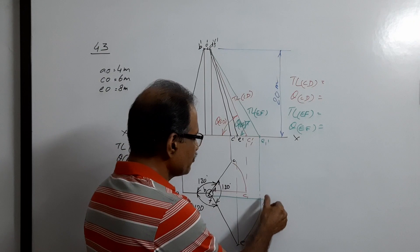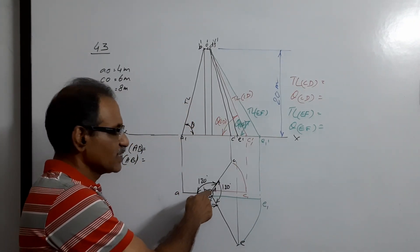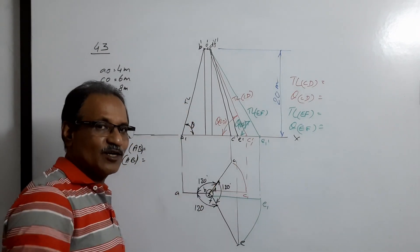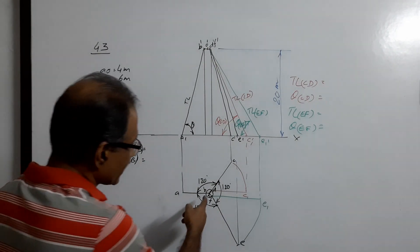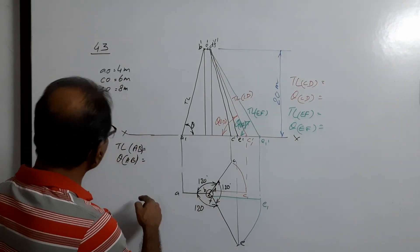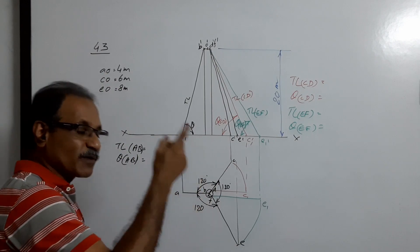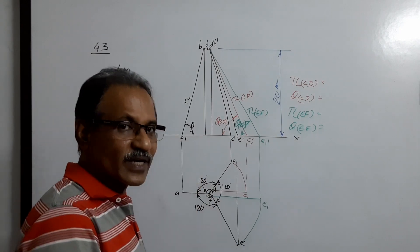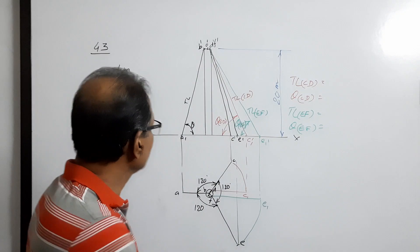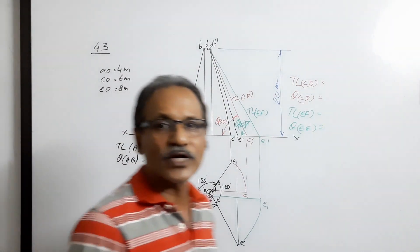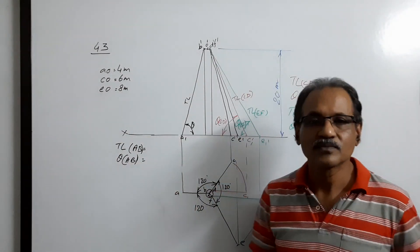It's a slightly confusing question because the wires are connected to the shell, but the ground distances — four meters, six meters, and eight meters — are measured from the center of the chimney, not from the shell of the chimney. That's all. I hope you understand it.